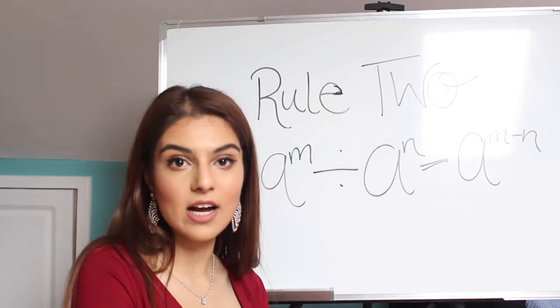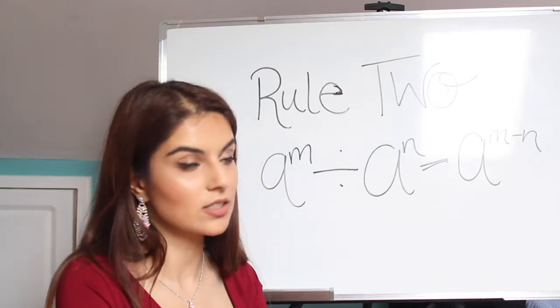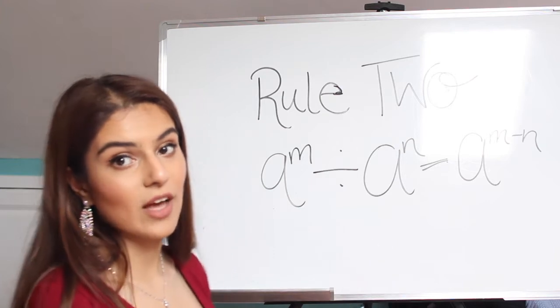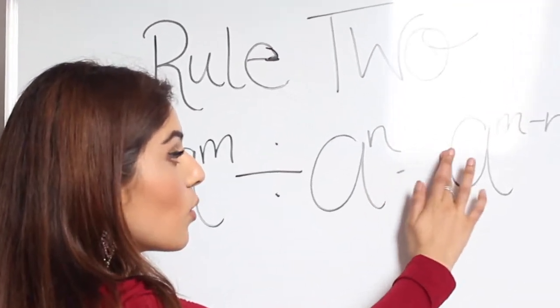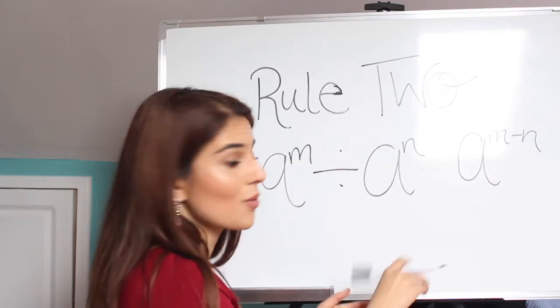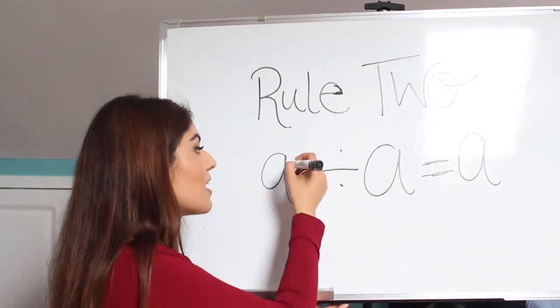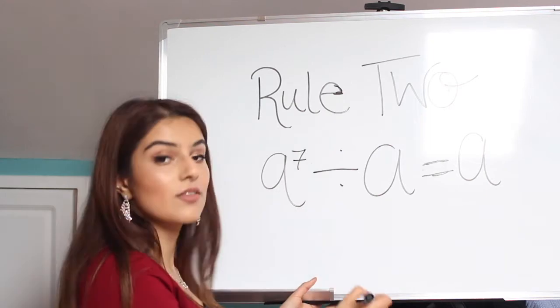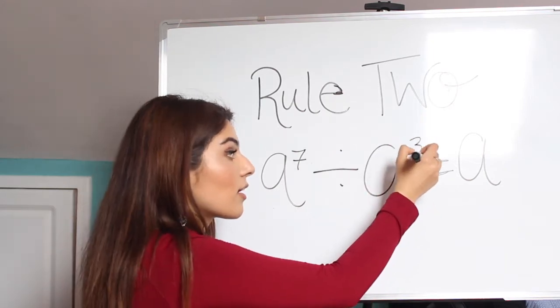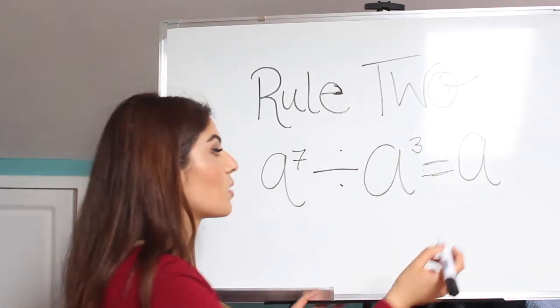Indices that you're dividing, you just minus the two powers. And I am so sorry about that equal sign. I don't know what I was thinking while I was writing it out. So for example, if we had a to the power of 7 divided by a to the power of 3, you would just get a to the power of 4.